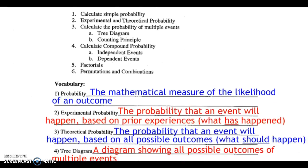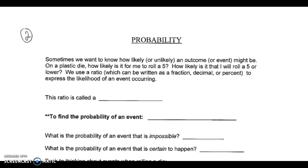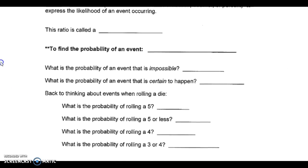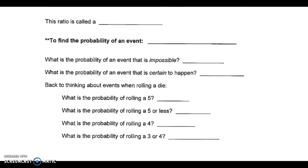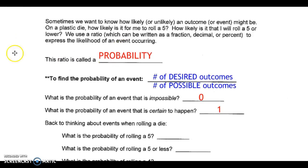That's about it for the definitions. Let's move on to the next page, which talks about different terms in probability. I'm going to show you the correct answers for these now. The first blank is probability — this ratio is called a probability. To find the probability of an event, we calculate the number of desired outcomes — what we want to happen — divided by the number of possible outcomes — what could happen.